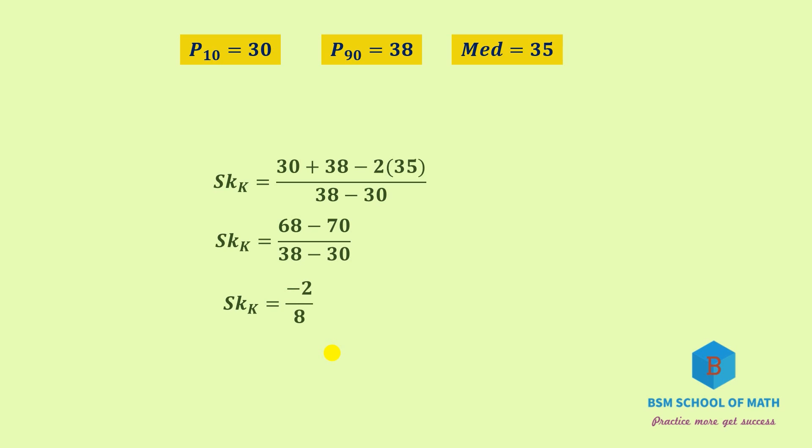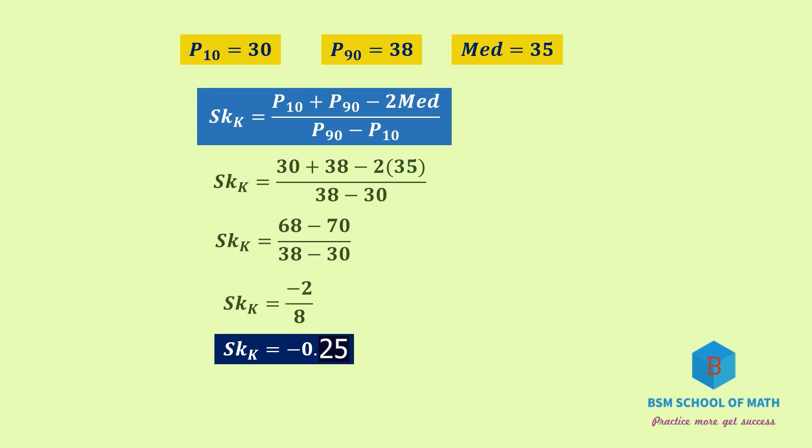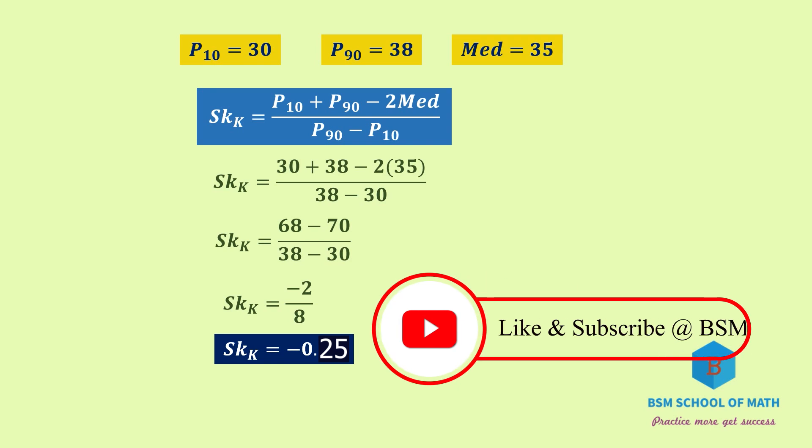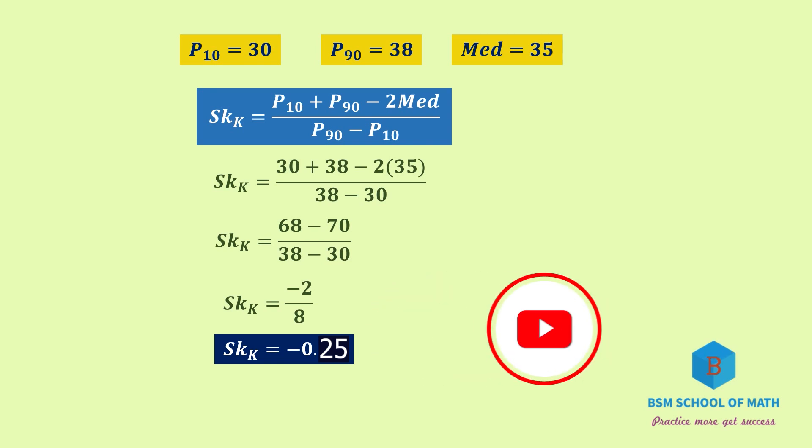The median is 35 from our previous calculation. Substituting these values into the percentile formula gives SK_K equals minus 0.25, the same answer. Use the decile formula when the question mentions deciles, or the percentile formula when it mentions percentiles.